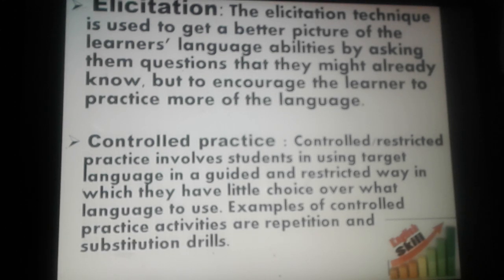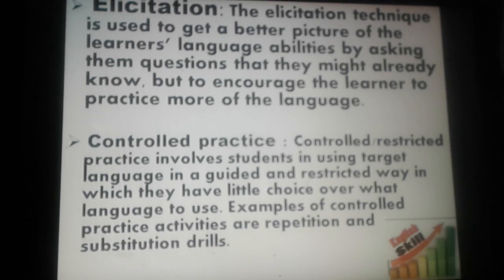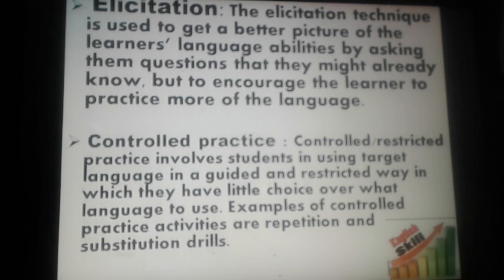Controlled or restricted practice involves students using the target language in a restricted way, in which they have little choice over what language to use. Examples of controlled practice activities are repetition and substitution drills. In controlled practice there is just one answer, not many different answers. For example, in a repetition drill the teacher produces a sound and learners repeat that sound — they have no other choice.